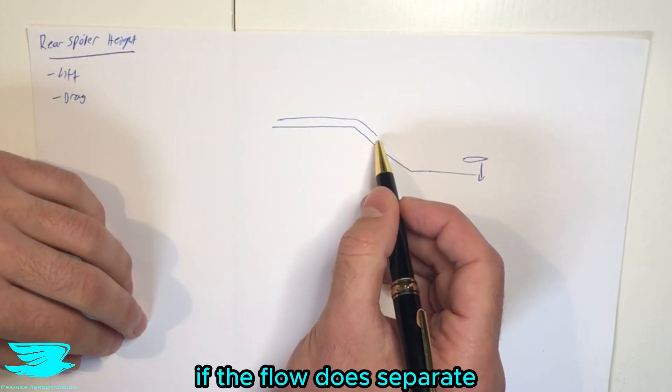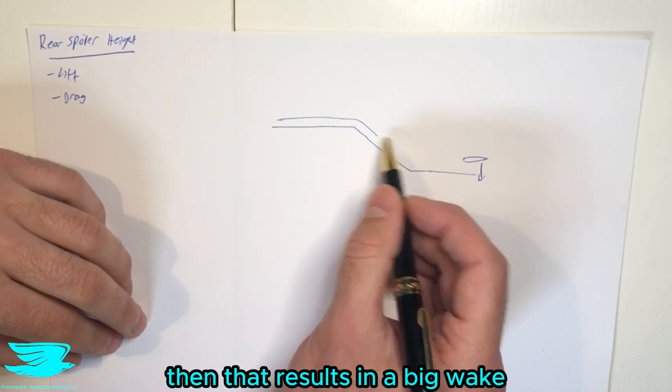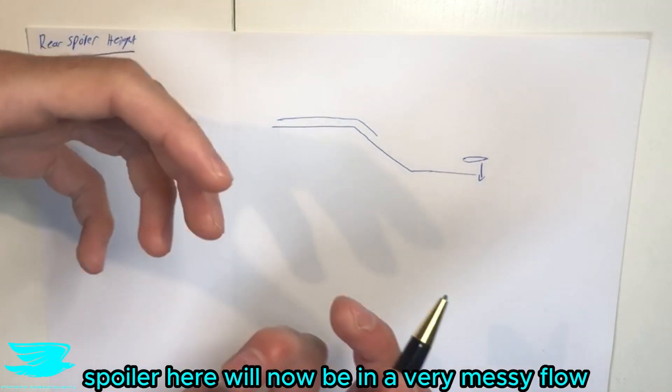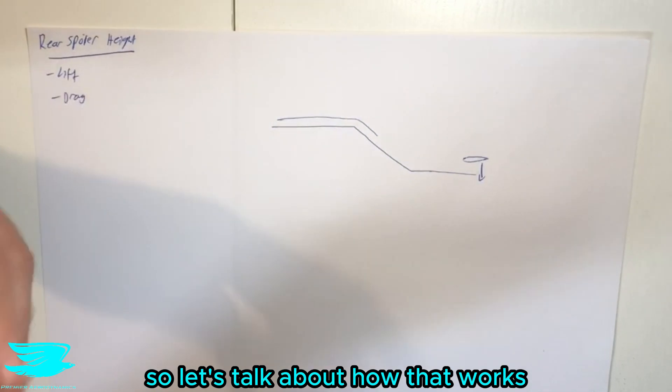If the flow does separate, then that results in a big wake and then this rear spoiler here will now be in a very messy flow and it won't be able to work properly. So let's talk about how that works.